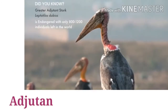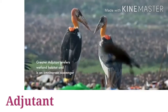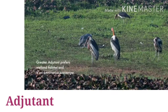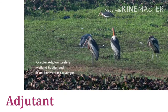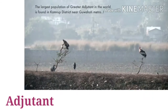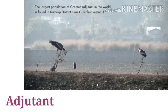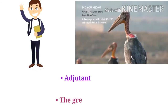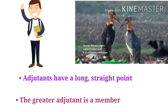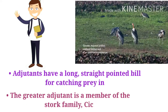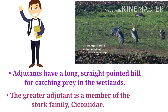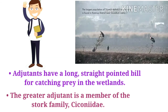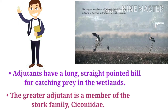Do you know this bird? This is an adjutant. A-D-J-U-T-A-N-T. Let's introduce adjutants. Adjutants have a long, straight, pointed bill for catching prey in the wetlands. The greater adjutant is a member of the stork family.